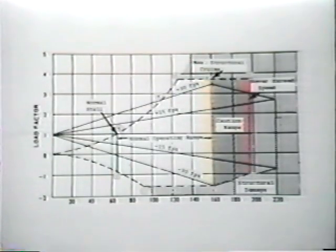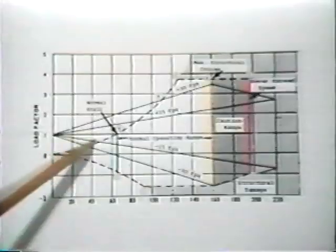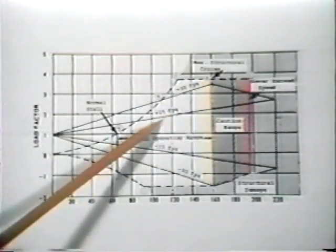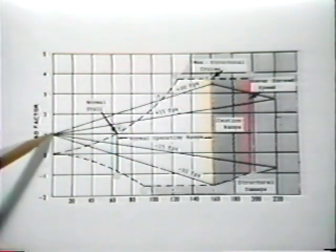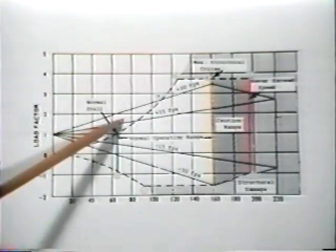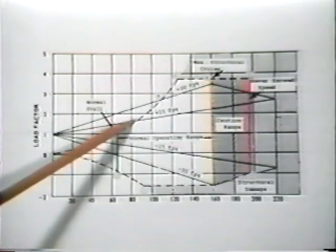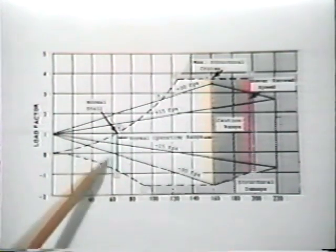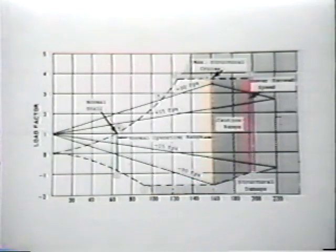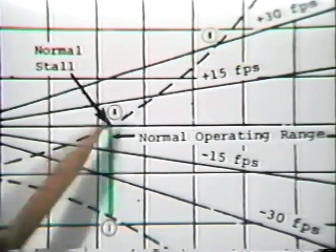A chart commonly referred to as a VN diagram displays load factors on horizontal lines and indicated airspeed in miles per hour on the vertical axis. The area enclosed by dotted lines is the operating envelope for the aircraft. Radiating out from 1g on the left margin are lines representing gust forces in feet per second — above the 1g line these gust forces are positive, and these positive and negative gusts are related to the attitude of the airplane.